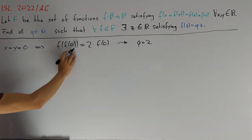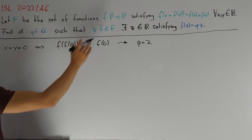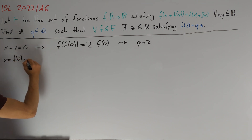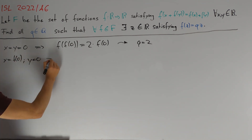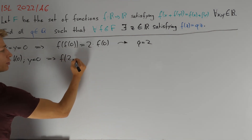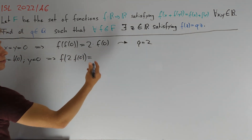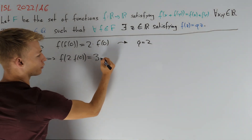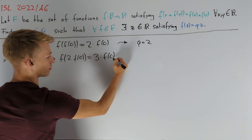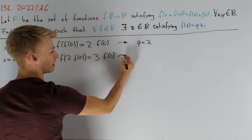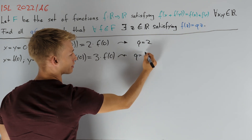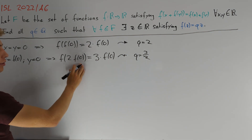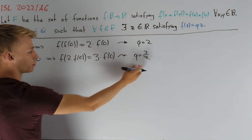Moreover, we are able to deal with f of f of zero, so we can try to plug in f of zero into our functional equation. Let x equal f of zero and y equal zero. We get that f of two times f of zero equals f of f of zero, which is two times f of zero, plus f of zero — so three times f of zero on the right-hand side. This gives us our next value for q, namely q equals three divided by two, because for z equals two times f of zero we have f of z equals three-halves times z.